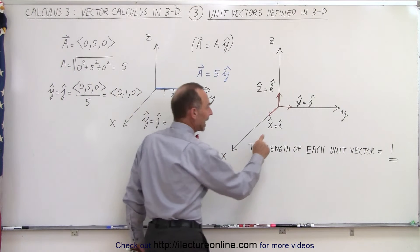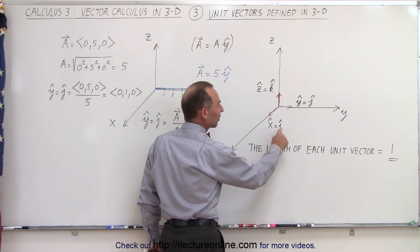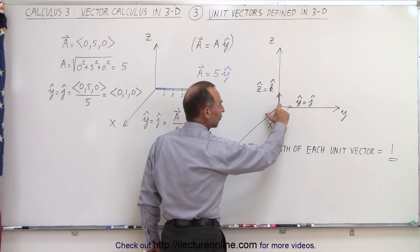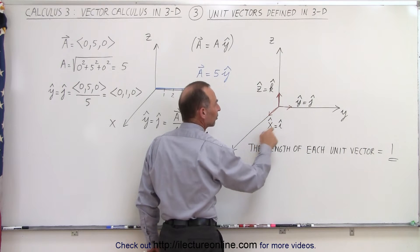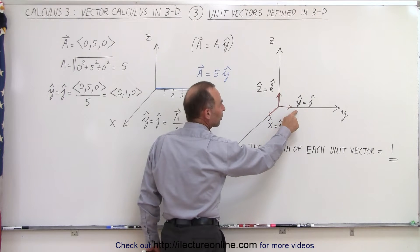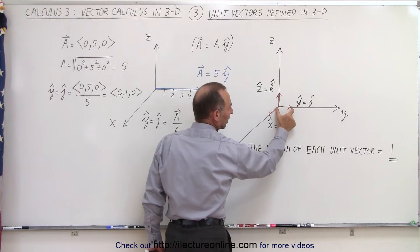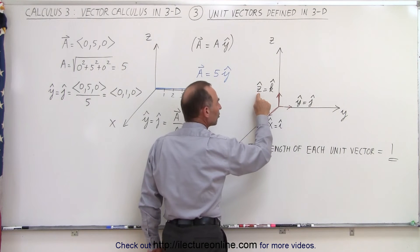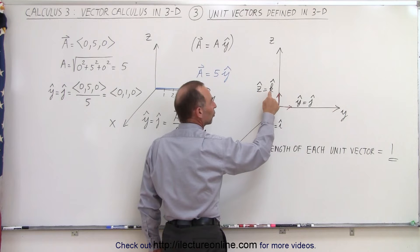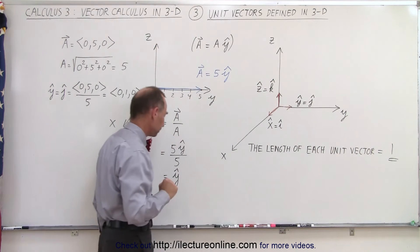You can see that the x-unit vector, which is also defined as the i-unit vector, has a length of one in the direction of the x-axis. The y-unit vector, which is also expressed as the j-unit vector, has a length equal to one in the y-direction. And the z-unit vector, which is also the k-unit vector, has a unit of one in the z-direction.